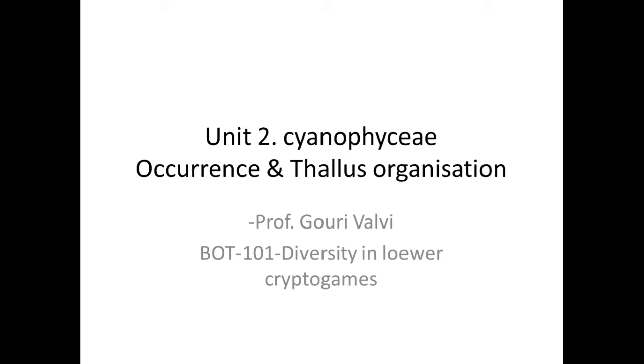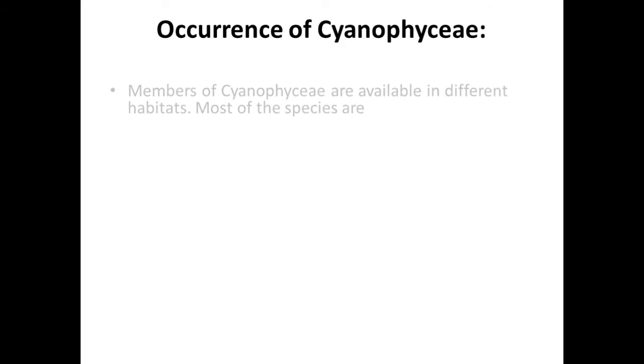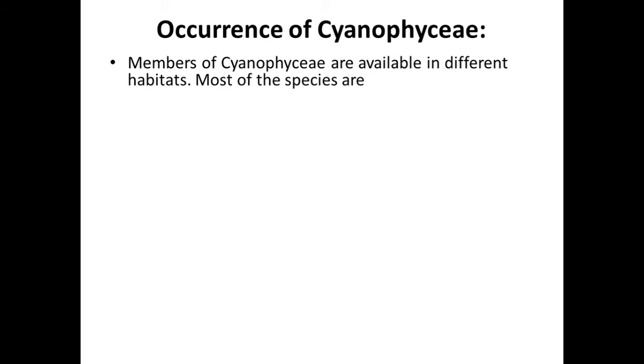We covered general characteristics and ecology of blue-green algae. Now today we are going to discuss its occurrence and ranges of thallus. The members of the Cyanophyceae are available in different habitats.